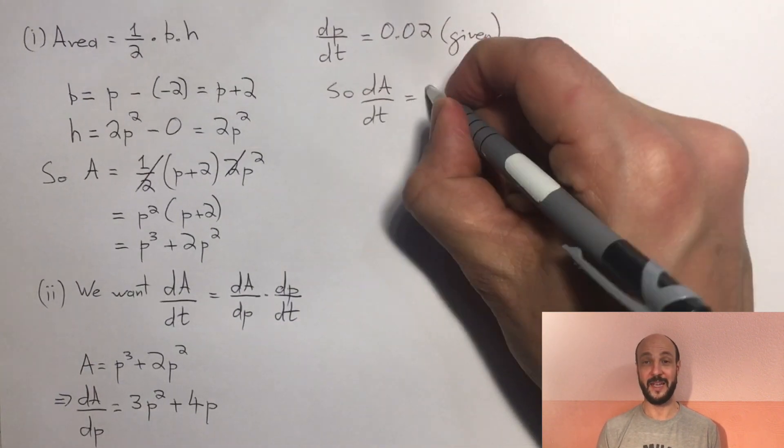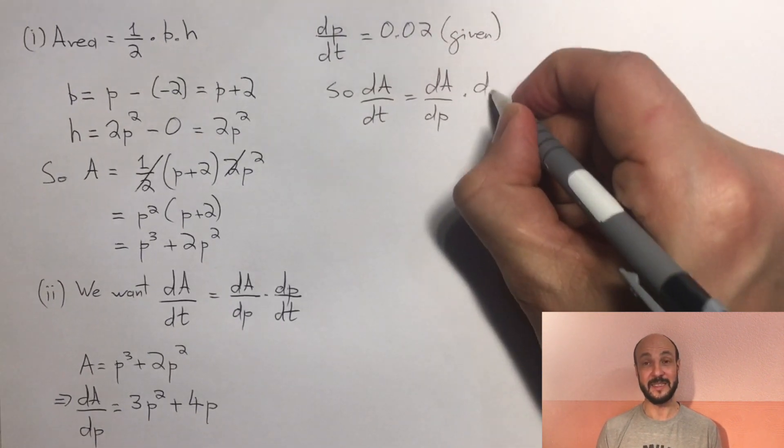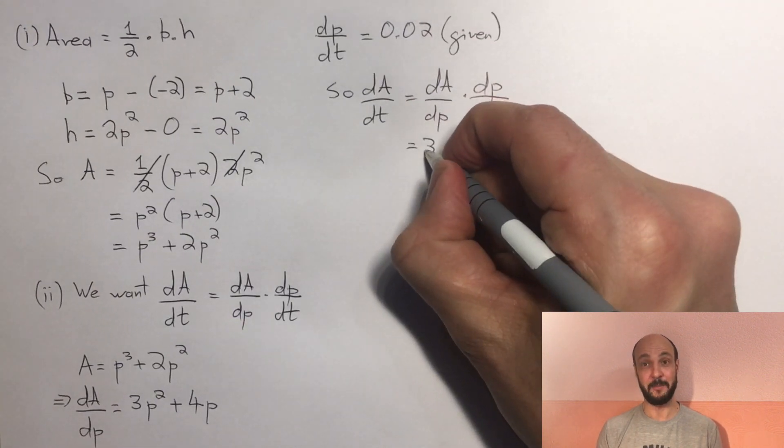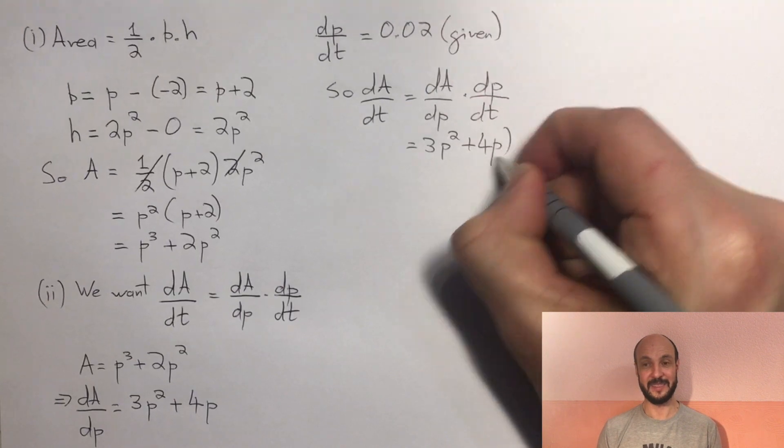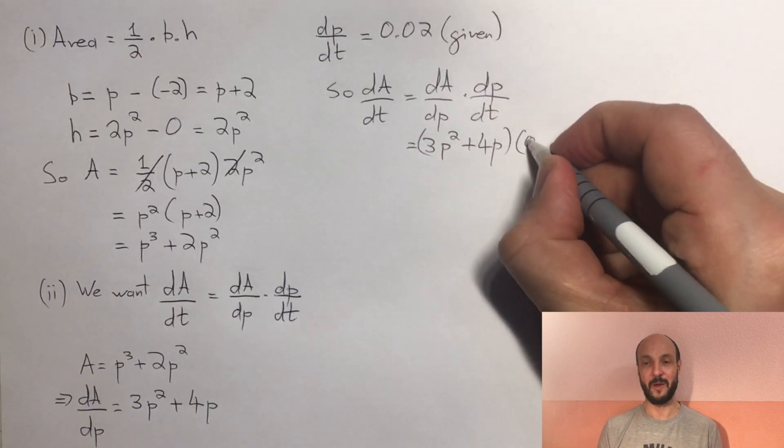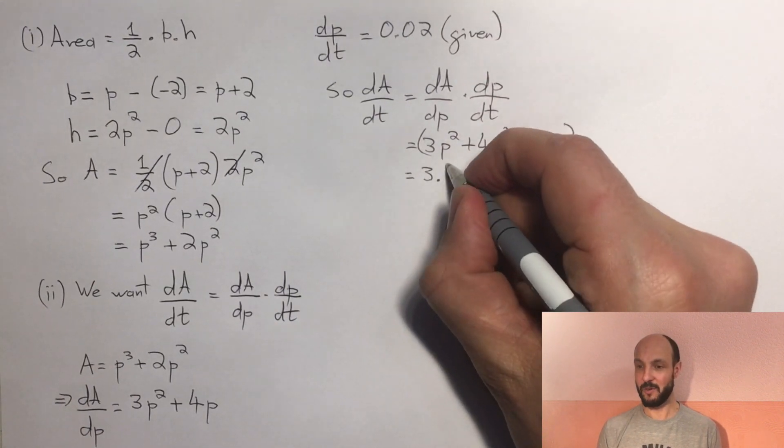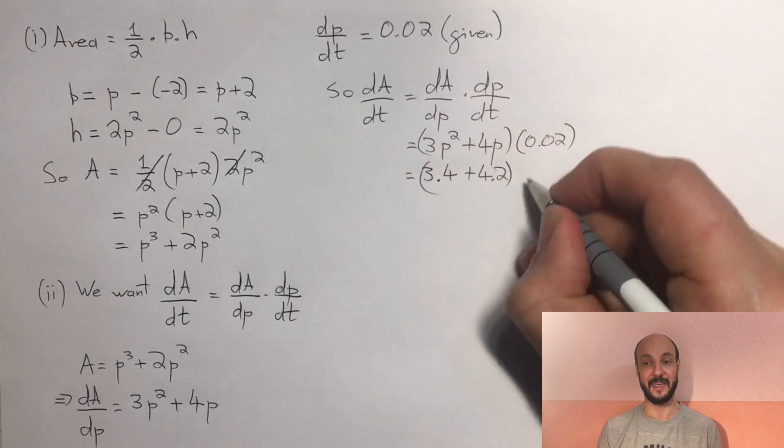So as we want the change in area over time, dA dt, we can say using our chain rule that dA dt is dA dp times dp dt. So in this case, we've got 3p squared plus 4p, all times by 0.02. And we're asked about the rate when p equals 2, so we can substitute p in there.